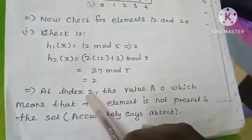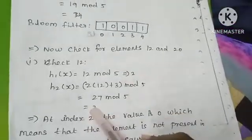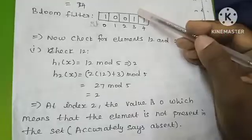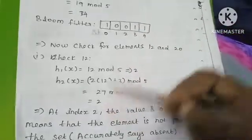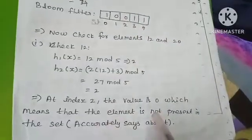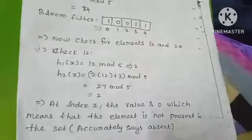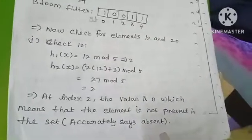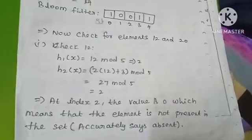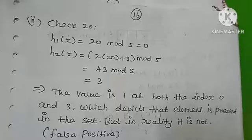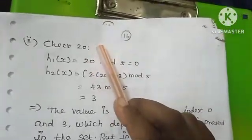27 mod 5 is 2, so the index is 2. We check the value at index 2. The value is 0, meaning it is not present. So the element is not found in the filter.